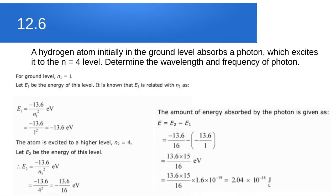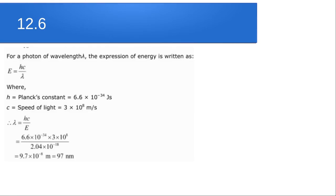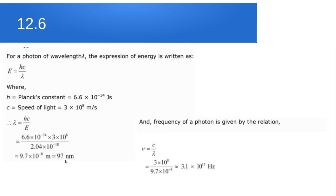Having obtained the energy absorbed from the photon, we can calculate its wavelength and frequency. Using E = hc/λ, we calculate λ = 97 nanometers. Then using c = νλ, so ν = c/λ, with c as the speed of light divided by 97 nm, we get a frequency of approximately 3.1 × 10¹⁵ Hz.